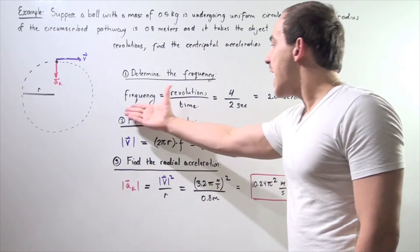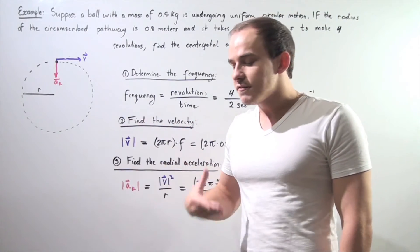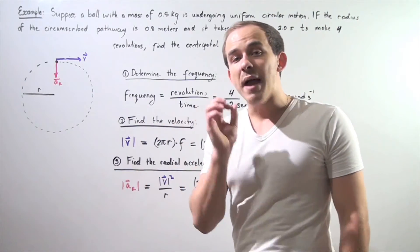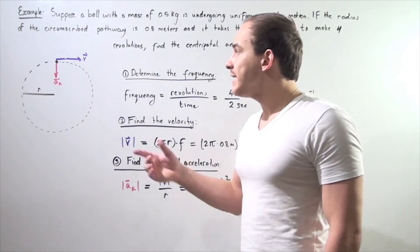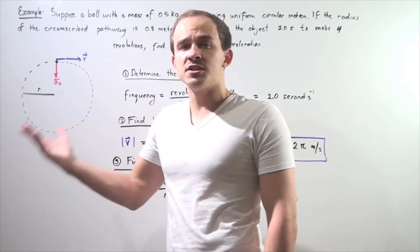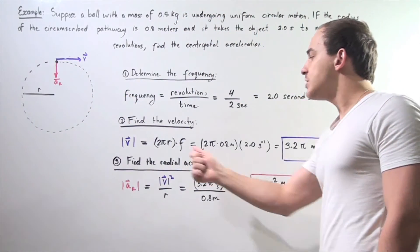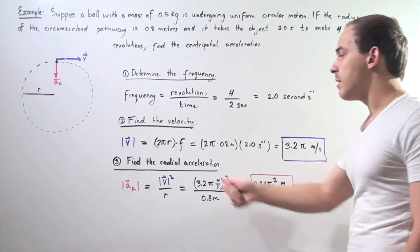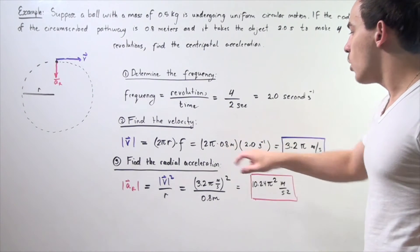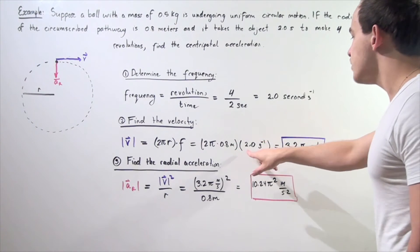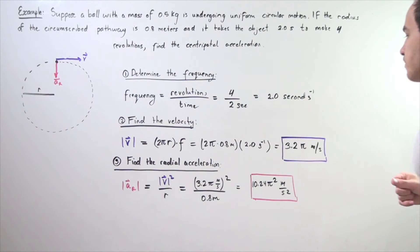Now let's use that information to find the velocity. The magnitude of the velocity can be found by taking the circumference of the circle and multiplying that by frequency. We get 2πr multiplied by frequency equals 2π times the radius, 0.8 meters, multiplied by 2 seconds to the negative one. That gives us 3.2π meters per second. This is our magnitude of velocity.